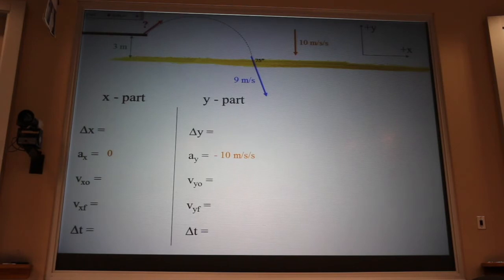Now, she ends up 3 meters below where she starts out. So, that's a minus 3 meters. The delta y. My question is, where do I put that 9 meters per second? Nowhere. Absolutely nowhere.